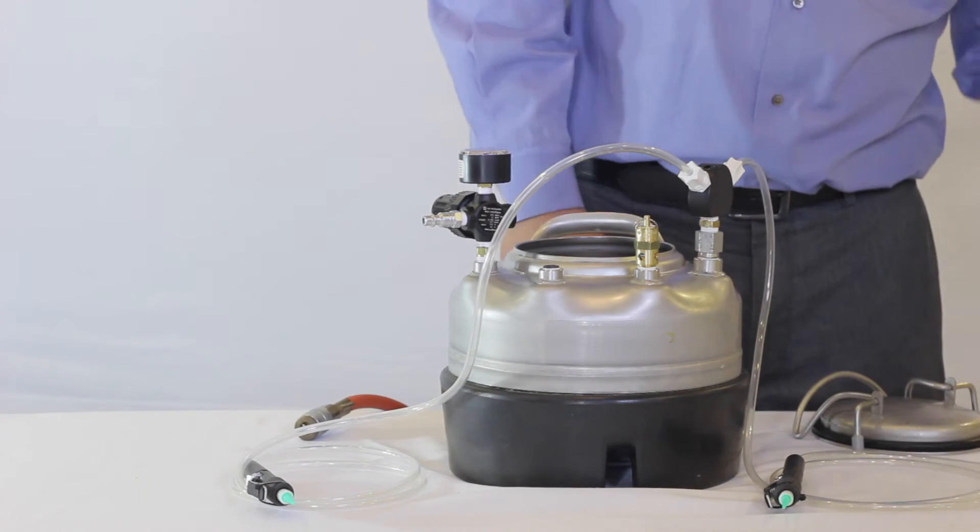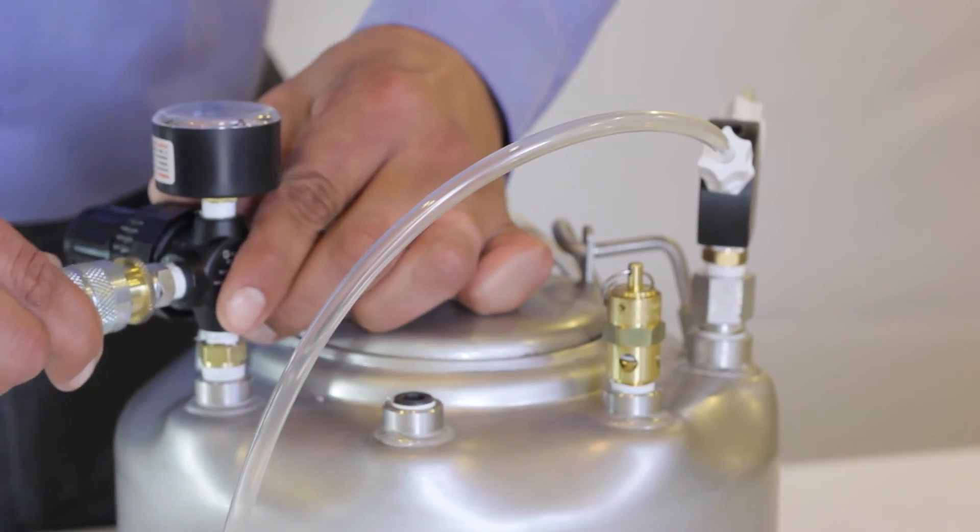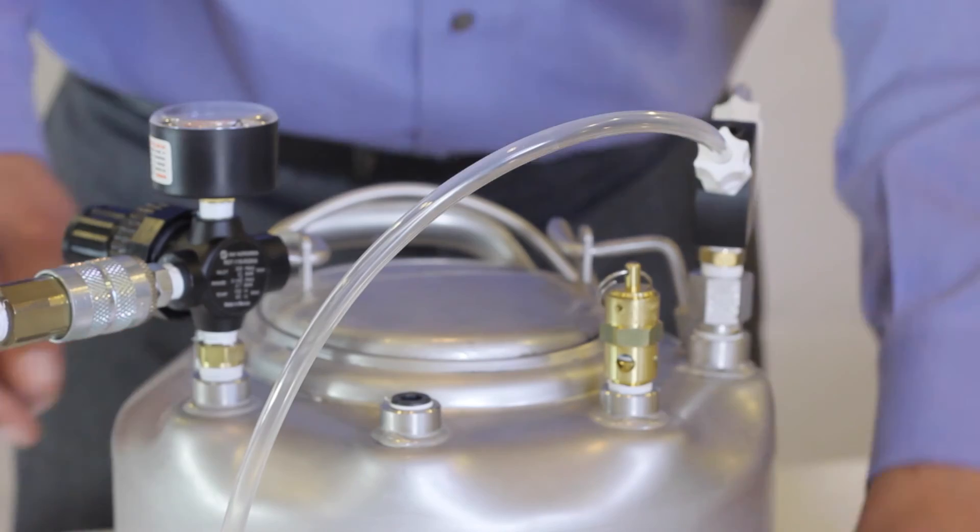To begin using the system, remove the lid and pour the desired bulk material into the top port of the unpressurized 1-Gallon stainless steel tank. Lock the lid back in place and connect your dry air source to the regulator.